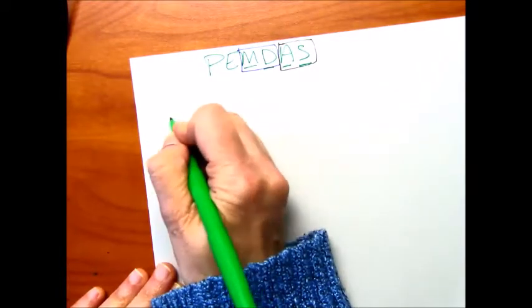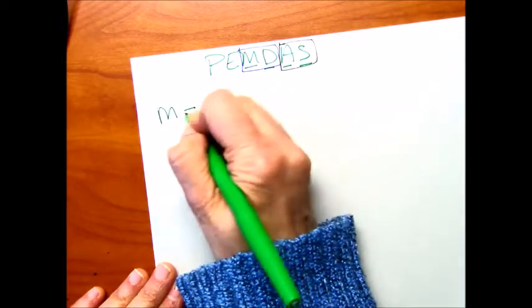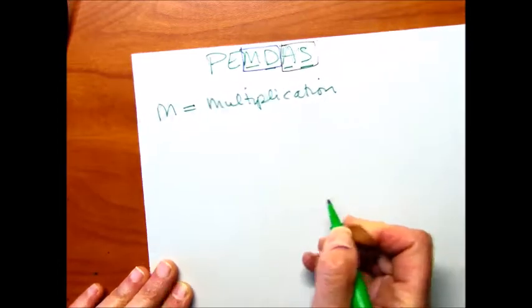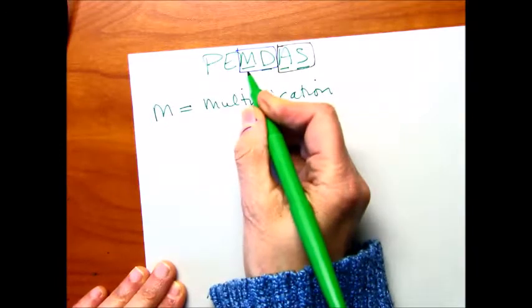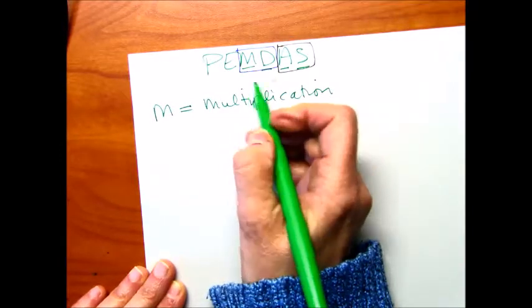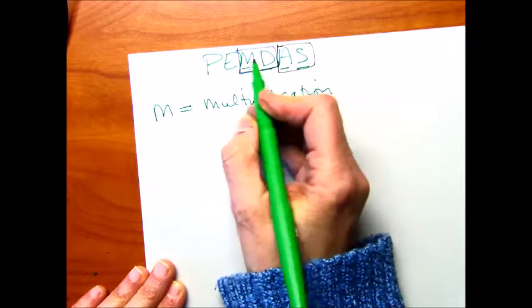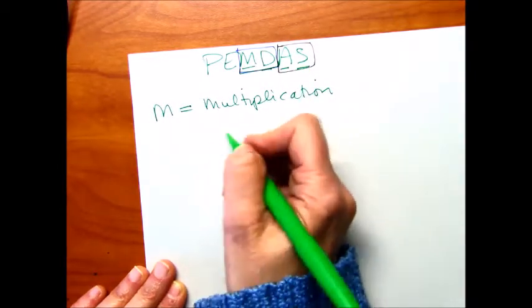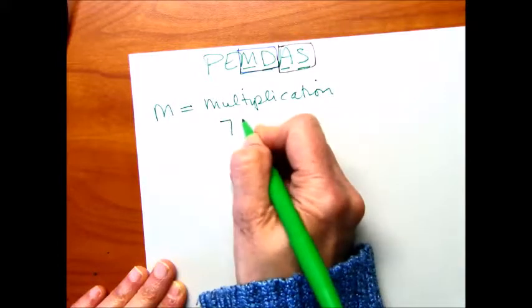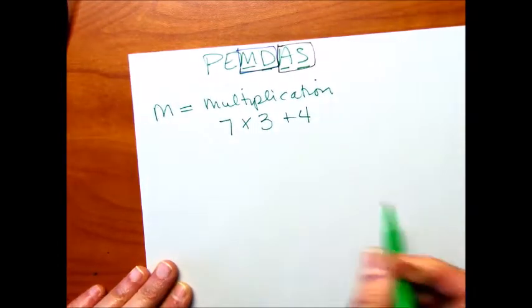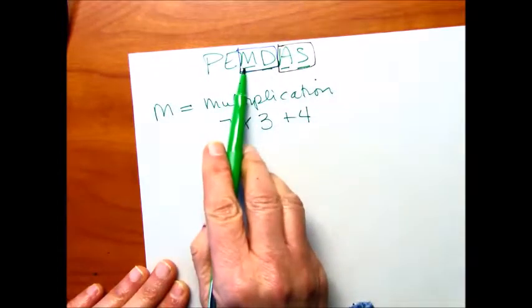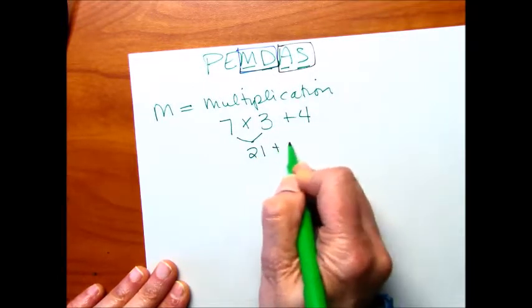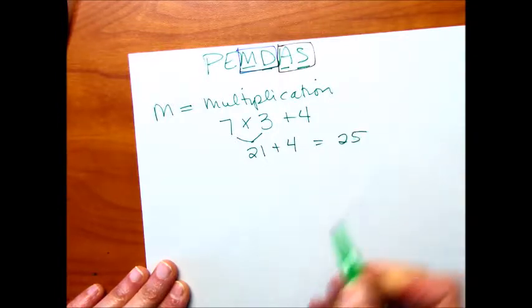So say we have M, I'll write this down here first. Multiplication is going to come before, I'm going to call this a group really. So multiplication is going to come before addition and subtraction. And so let's say we have 7 times 3 plus 4. So because multiplication comes before addition, we're going to do the multiplication problem first, 21, and then we'll add the 4, and then we've got our answer, 25.